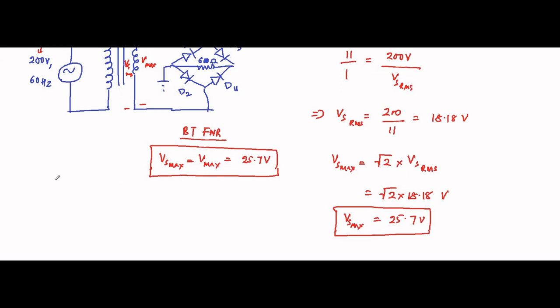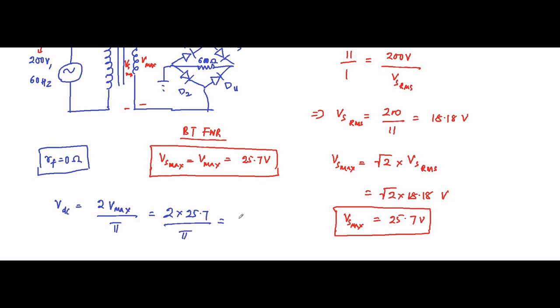Now everything is clear — simply apply the formulas. The DC voltage value is 2Vmax / π. This formula is applicable when diodes are ideal, meaning zero forward resistance leading to zero forward voltage drop. So VDC = 2 × 25.7 / 3.14, which equals 16.36 volts. This is the DC value of the output voltage.